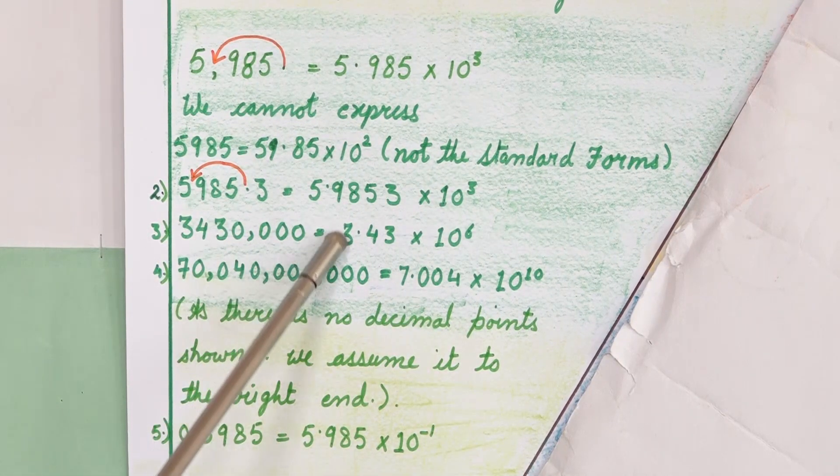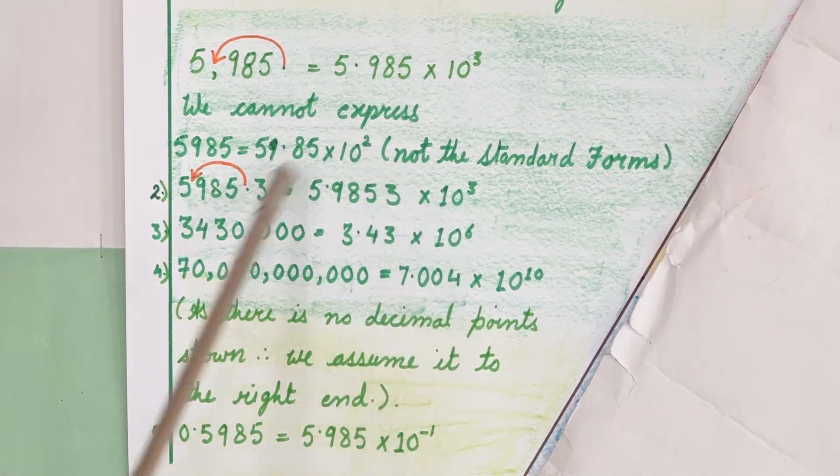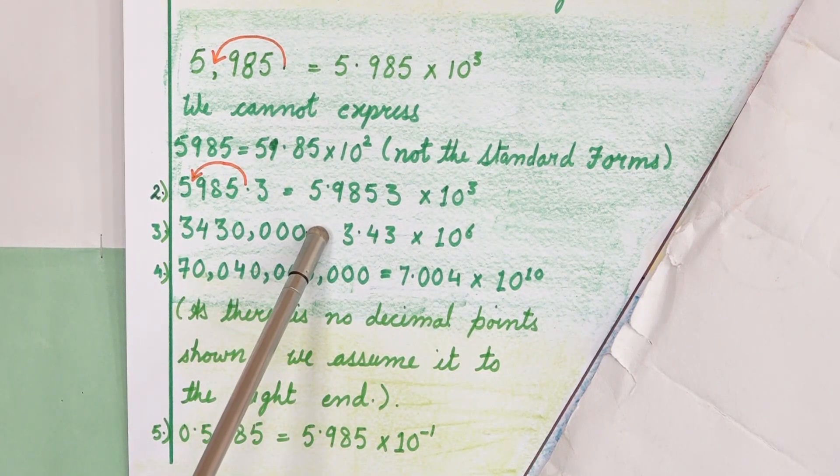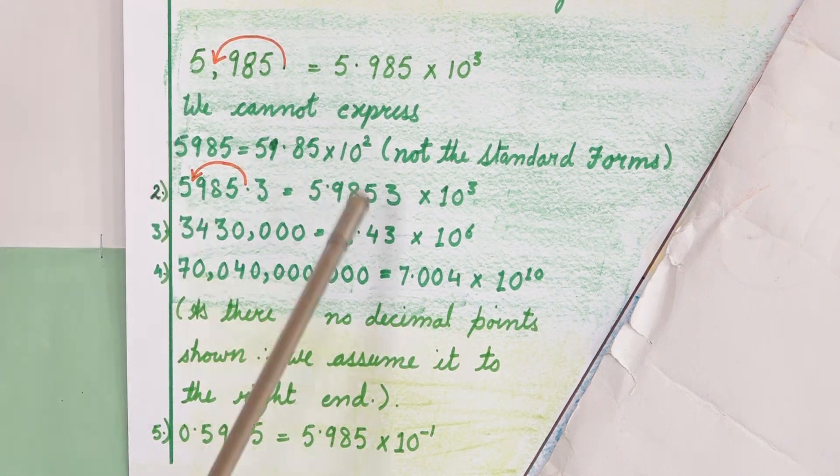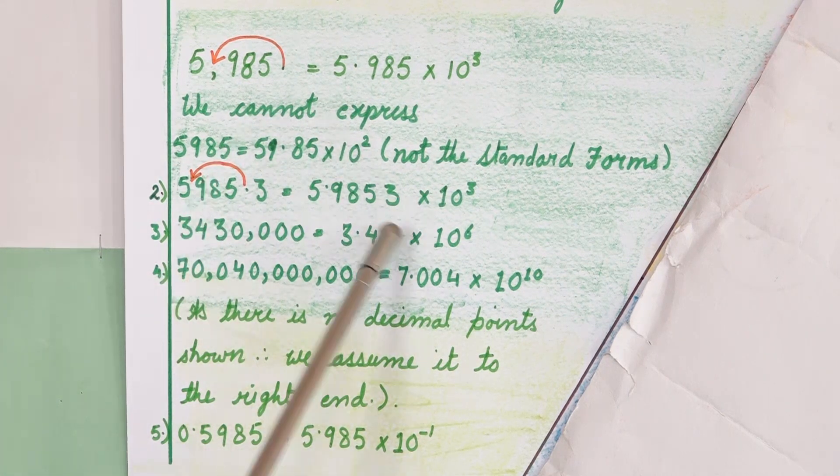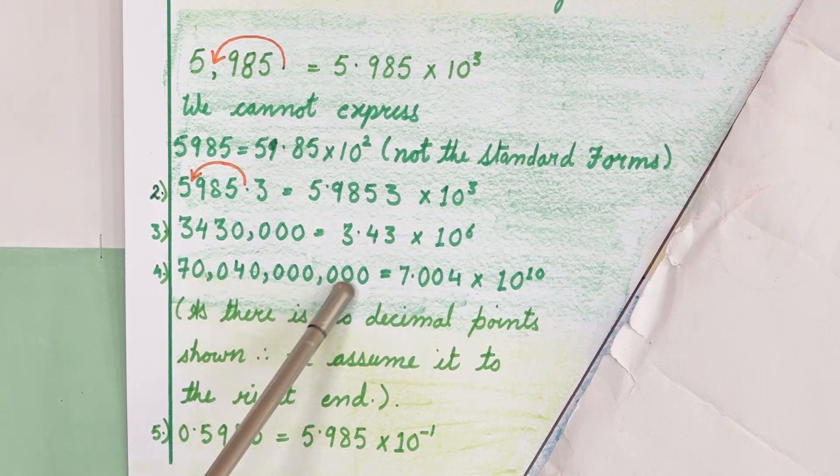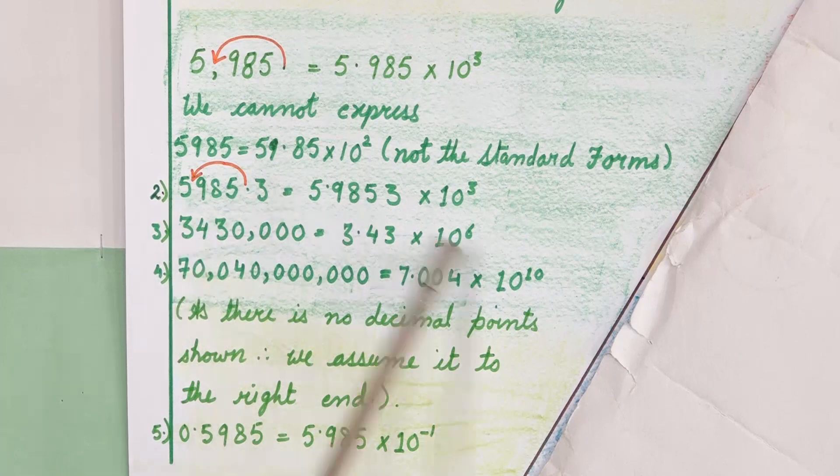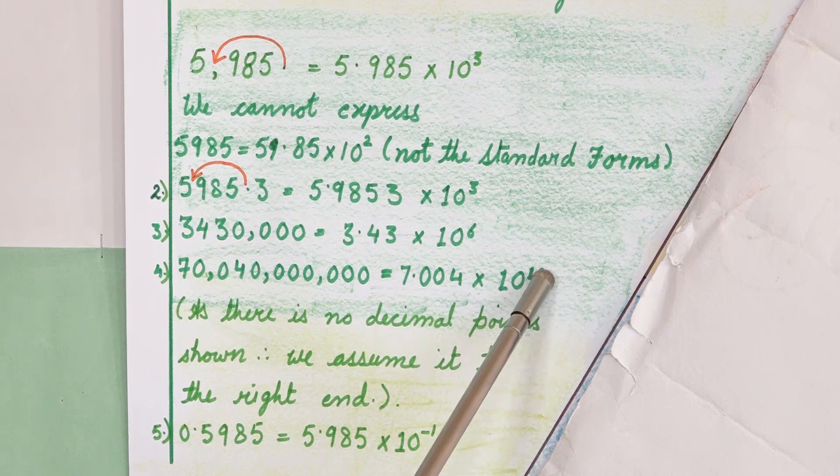Now look at this number. This is a very large number. It is very difficult to read this. But once we change it into standard form it is very easy for us to read this. Now again there is no decimal sign. That means decimal sign is somewhere here. Now shift this decimal sign from this side to this.